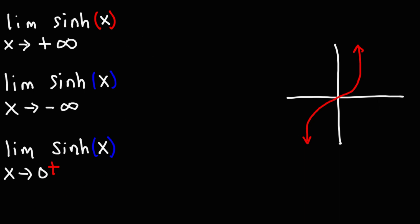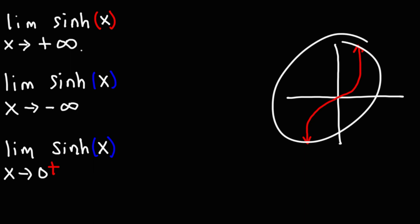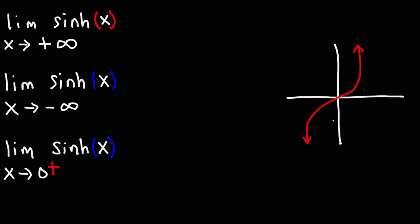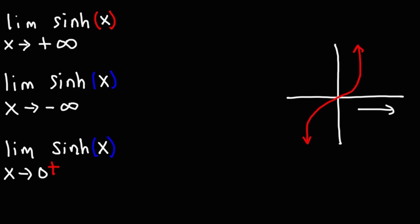What happens to the y-value of this graph as we approach infinity along the x-axis? As we approach to the right — as x goes to positive infinity — notice what happens to y: y goes up to positive infinity. So that's going to be the limit as x approaches positive infinity for hyperbolic sine.